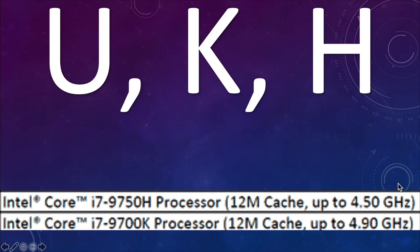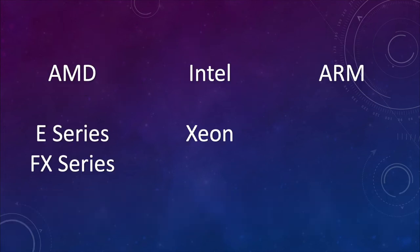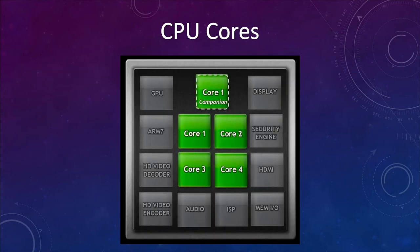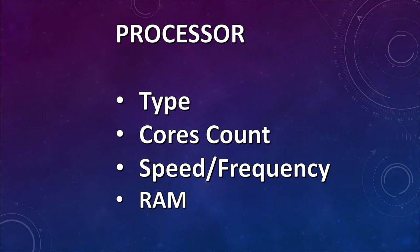You'll also see E series, FX series in AMD, Intel Xeon, and some ARM processors in notebooks. If going AMD, buy the Ryzen series; if Intel, buy the Core series. The number of cores determines your multitasking capacity — more cores means more threads and more parallel processing. Always buy a processor with four cores or above; dual-core processors are not good enough for today's standards.